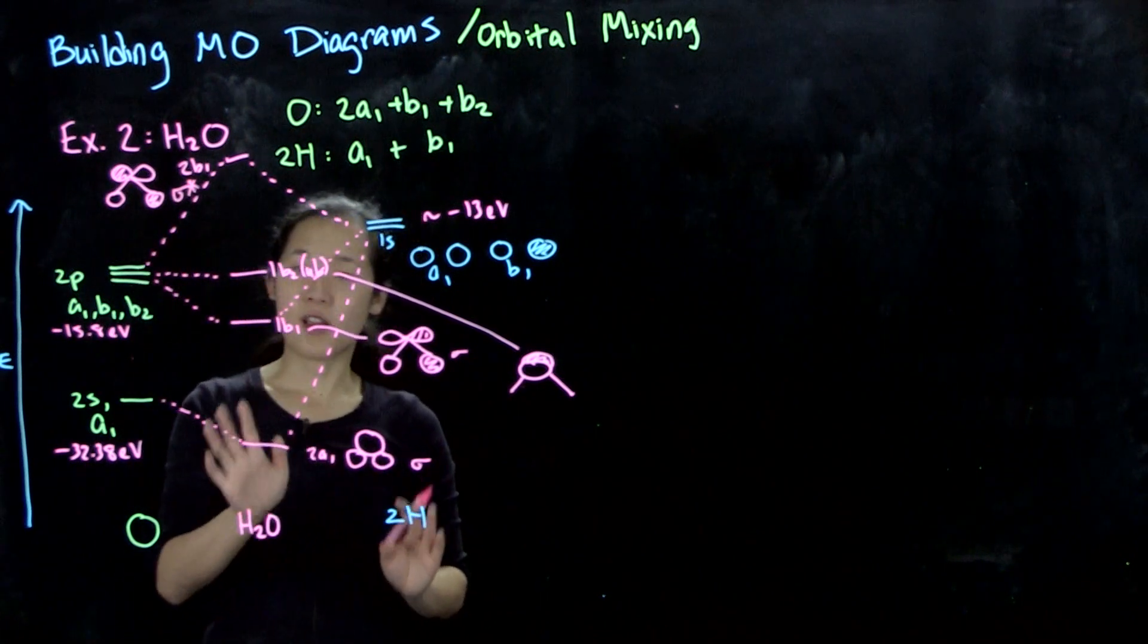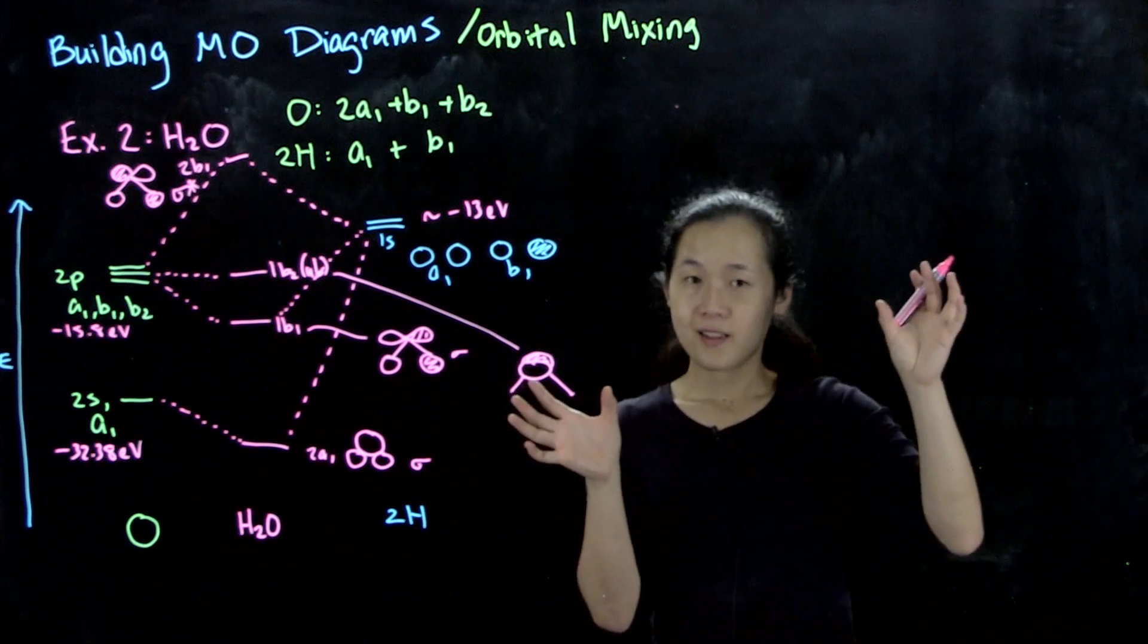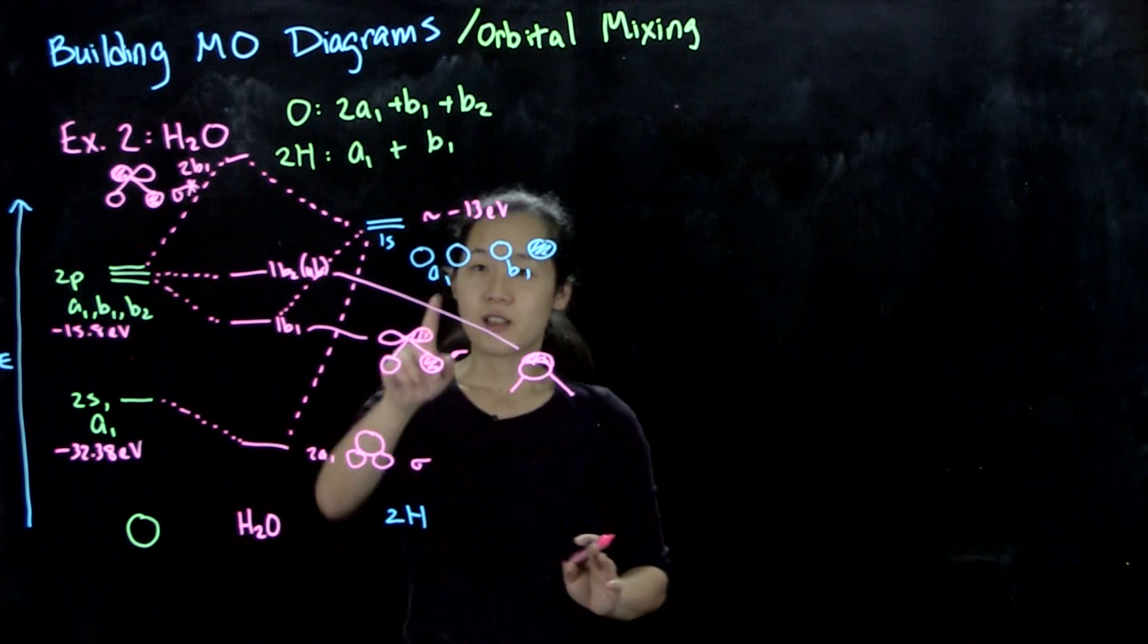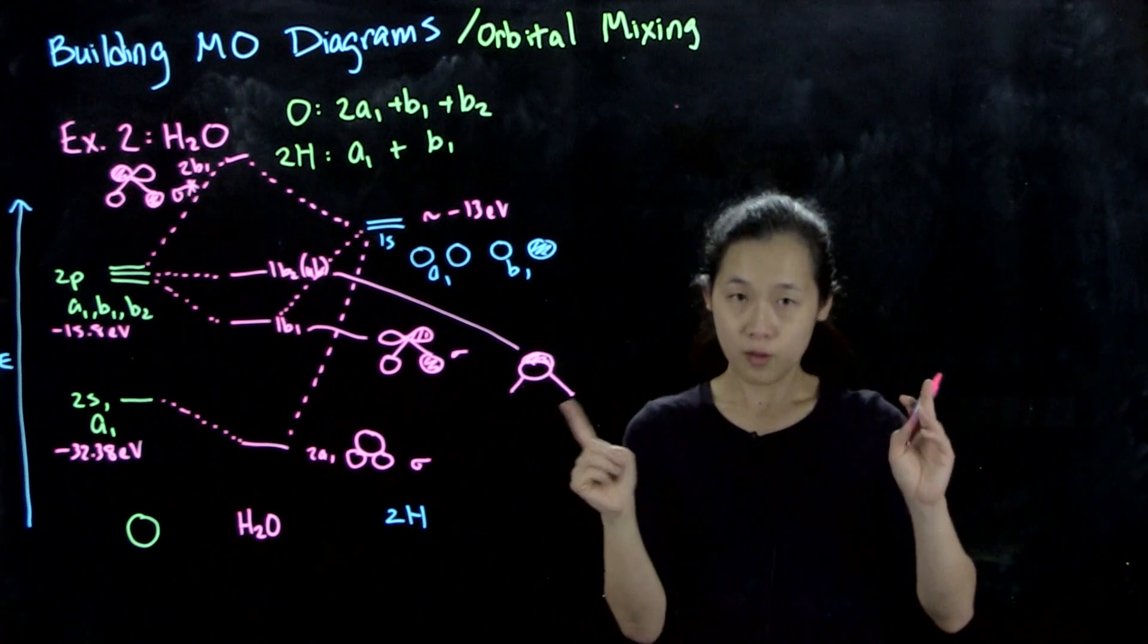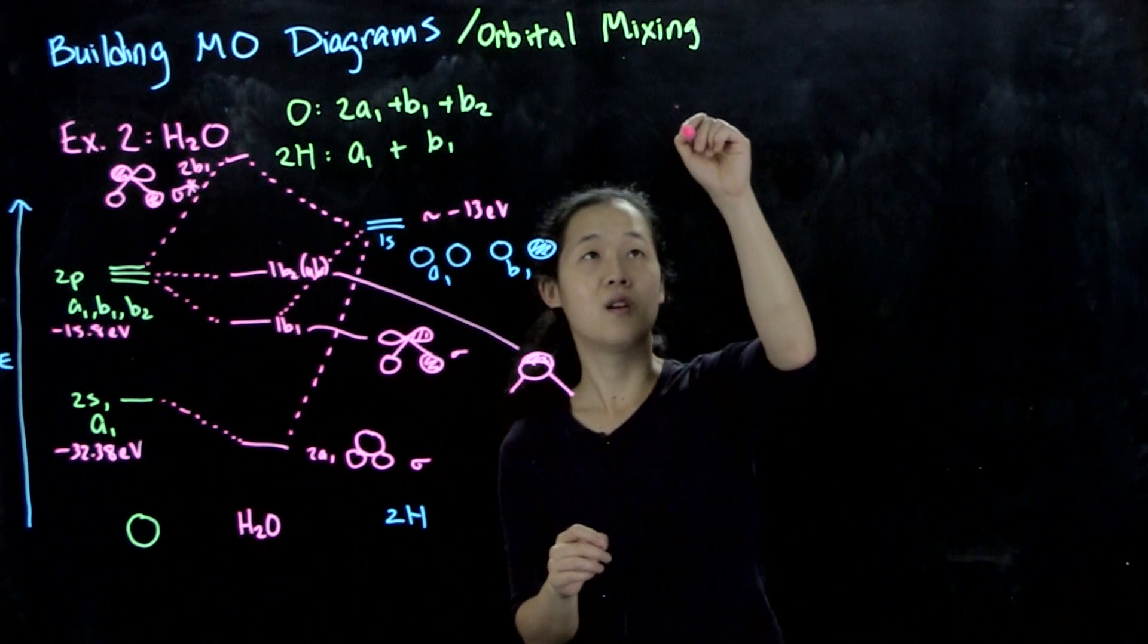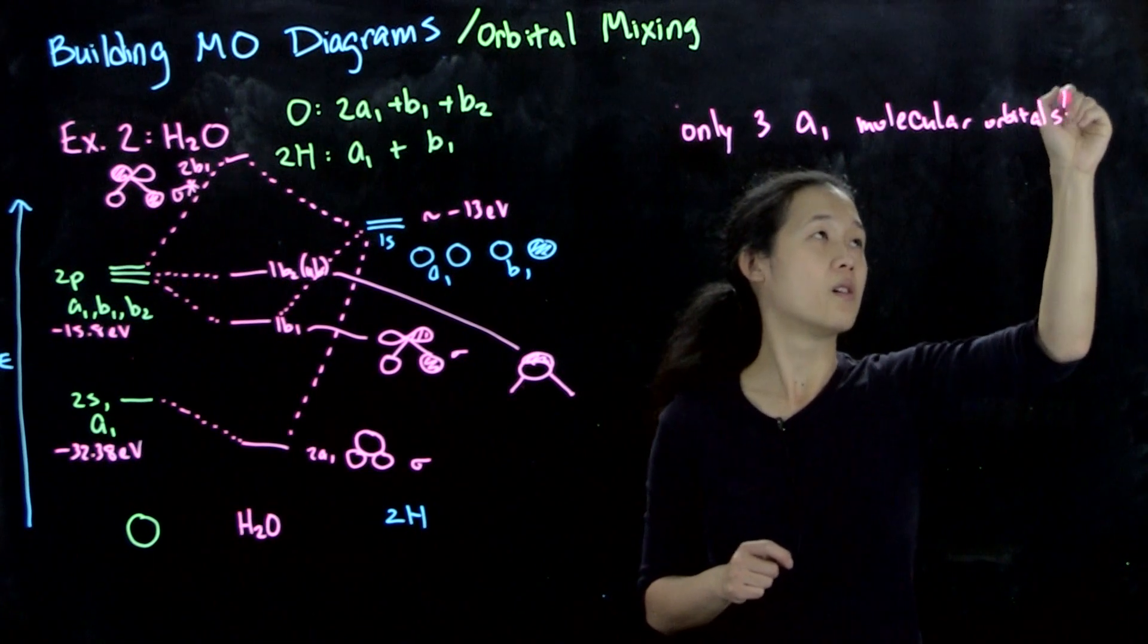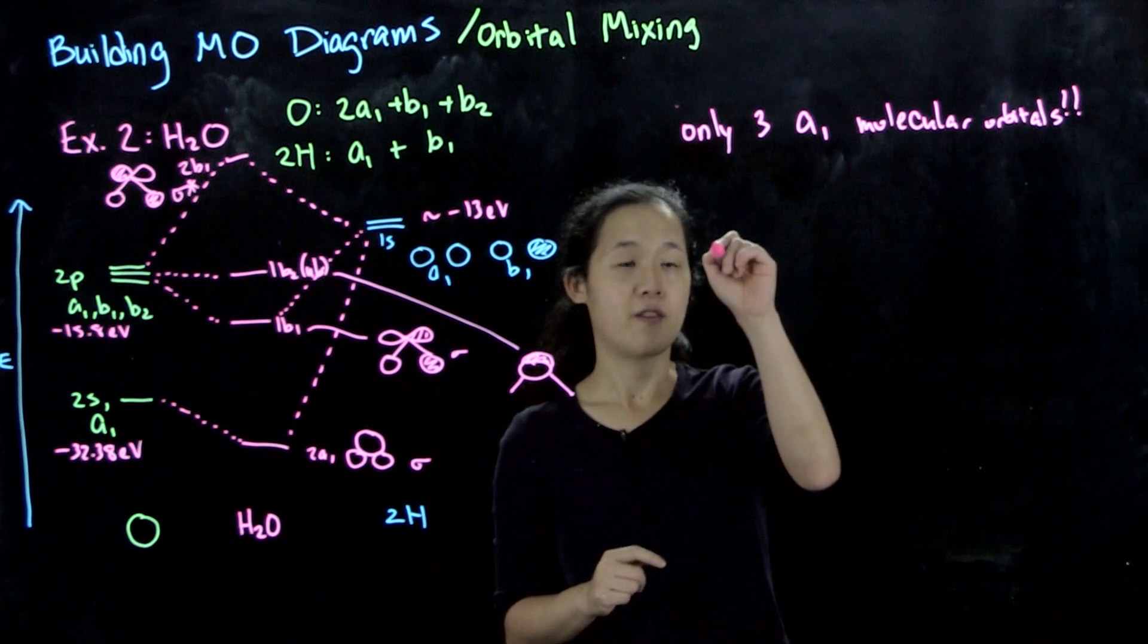I've avoided doing the other a1s so far because we have an issue. I've said that when two things, two orbitals come together, they form bonding and anti-bonding combinations. But I've also said the number of orbitals going in has to be the number of orbitals coming out. What we have here is a1 with a1 and a1. We only have three a1 SALCs or atomic orbitals, so only three a1 molecular orbitals out.